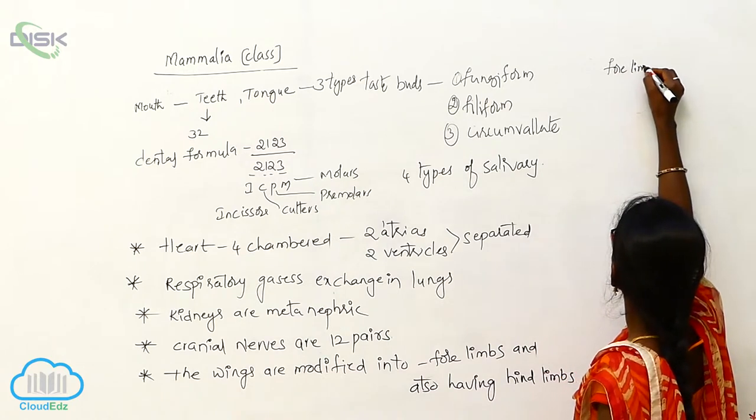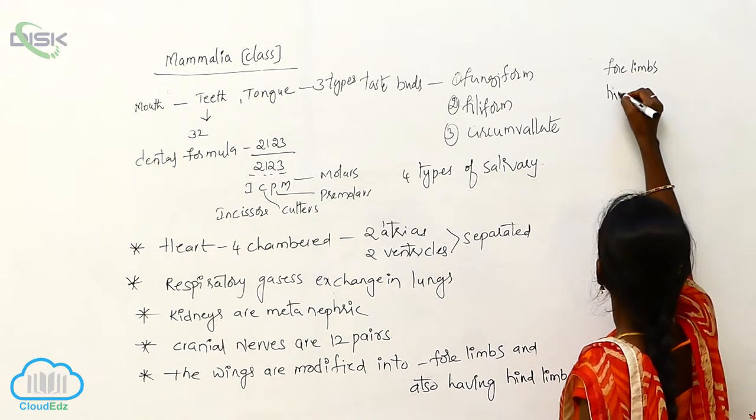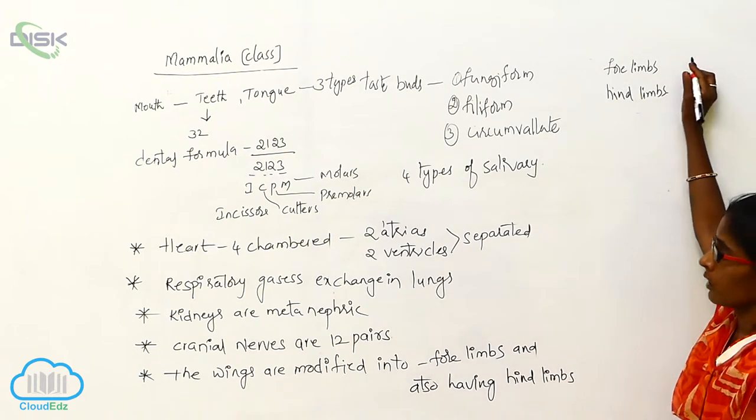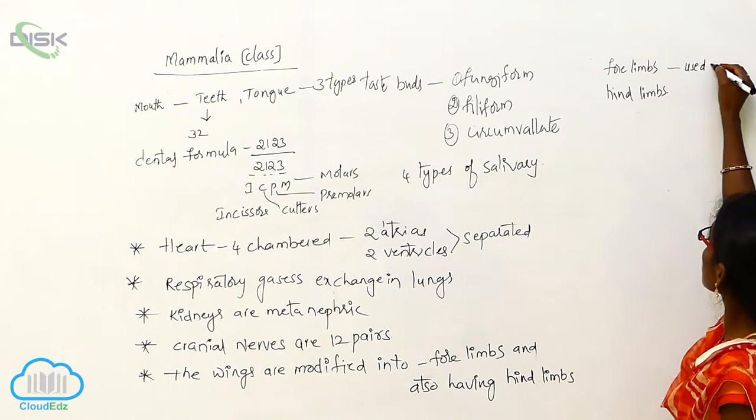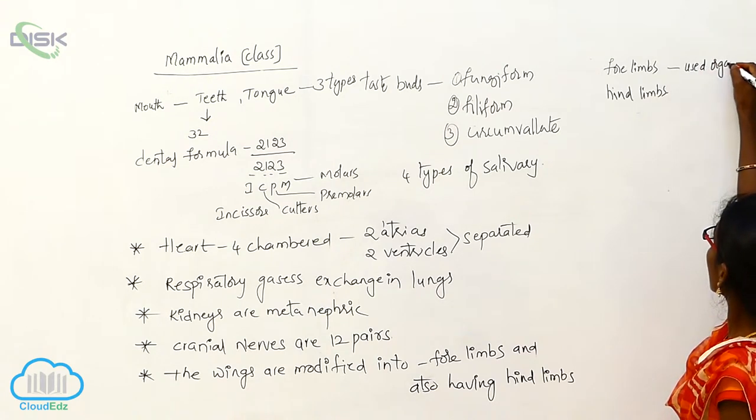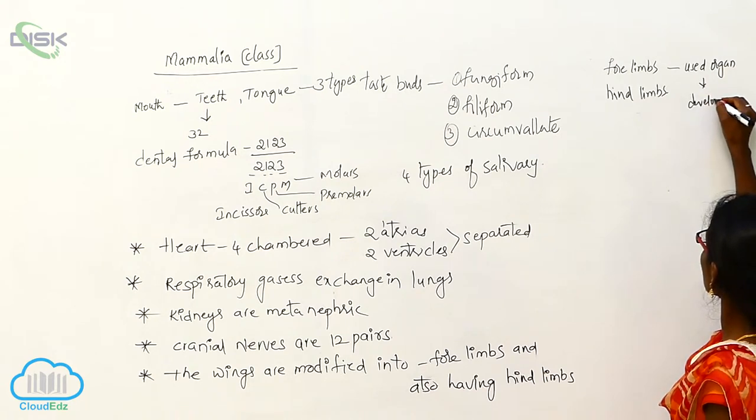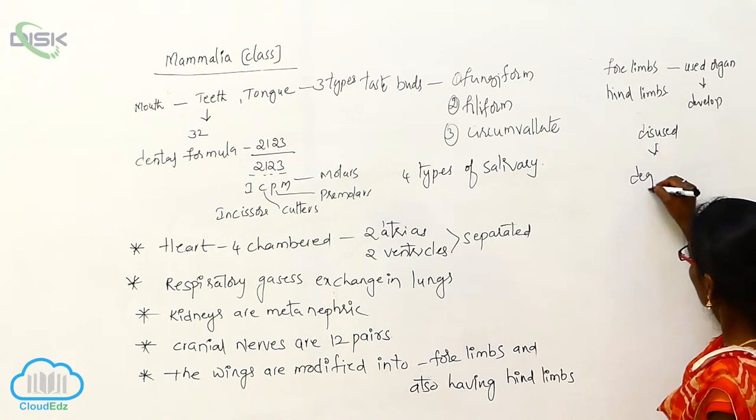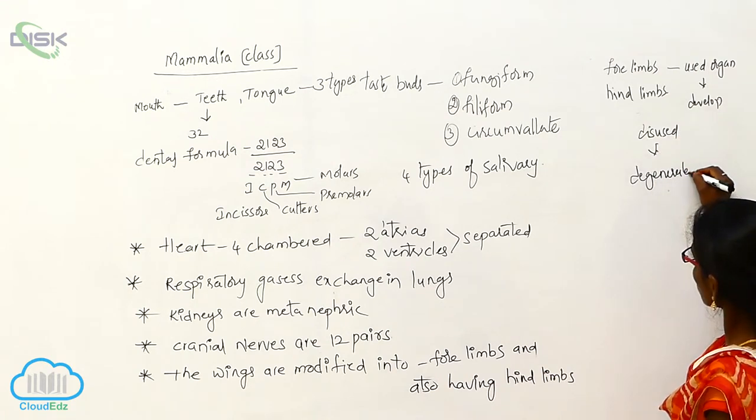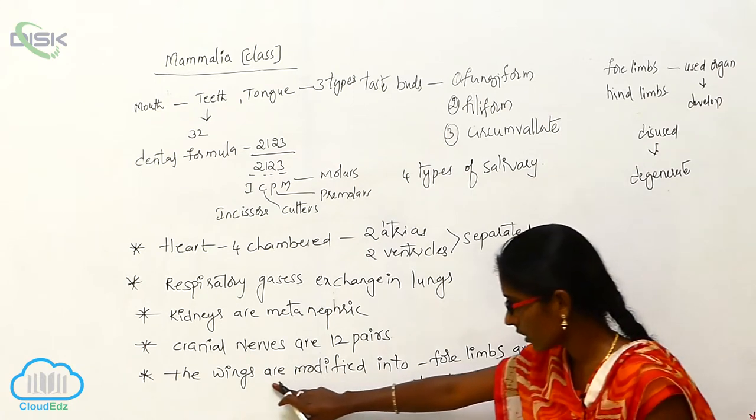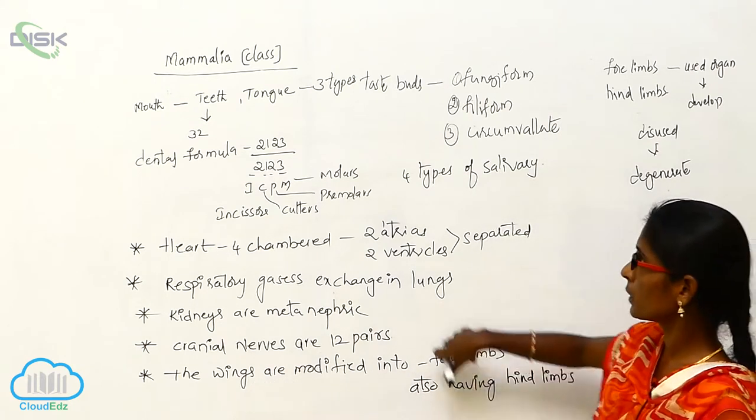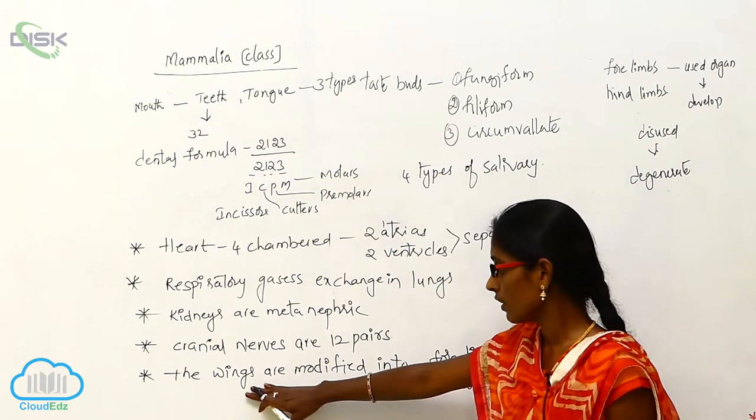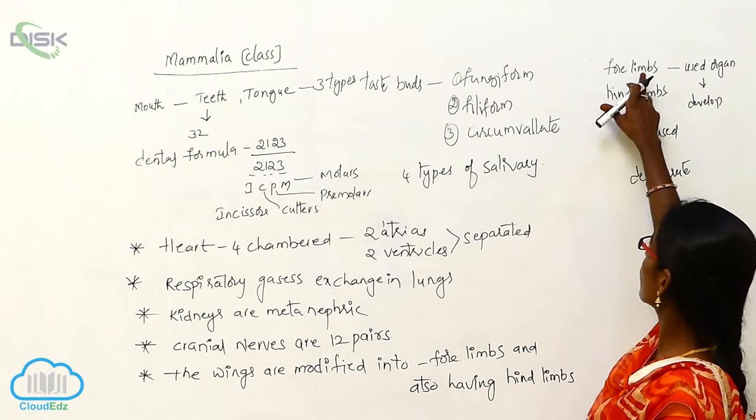Used organs undergo development. Disused organs are degenerate. So here the wings are highly developed in the mammalian organisms. That's why the wings are modified into forelimbs.